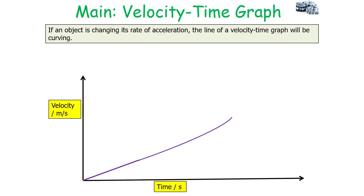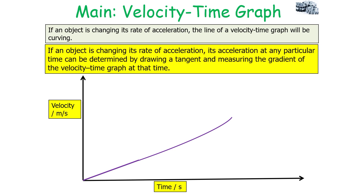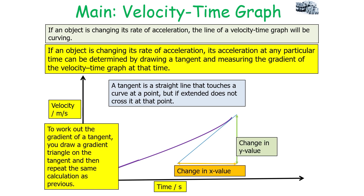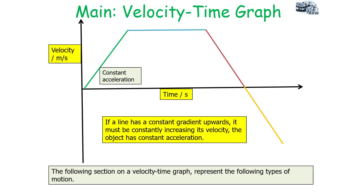If an object is changing its rate of acceleration, the line of the velocity-time graph will be curving. The acceleration at any particular time can be determined by drawing a tangent and measuring the gradient of the velocity-time graph at that time. A tangent is a straight line that touches the curve at a point but, if extended, does not cross it at that point. To find the gradient of the tangent, draw a gradient triangle on it and repeat the same calculation.